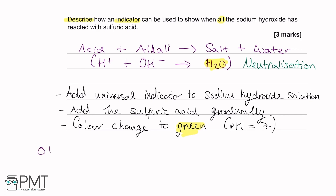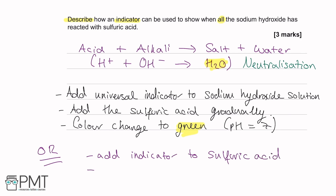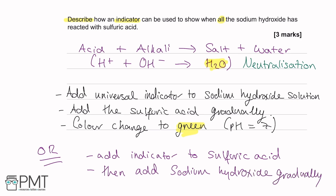An alternate answer is to add the indicator to the sulfuric acid and then add the sodium hydroxide gradually — the colour change will still be the same. That was a three-mark question, and you can see the answer is broken clearly into three points so the examiner can clearly mark it.